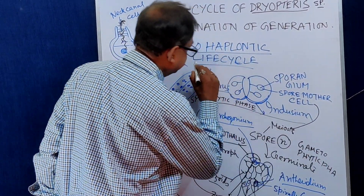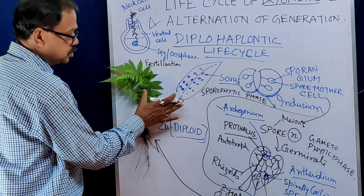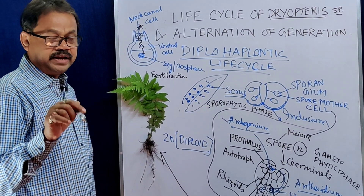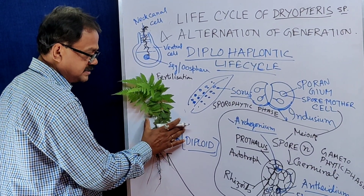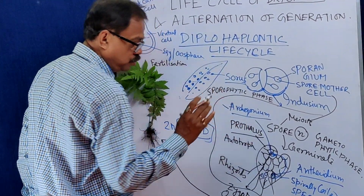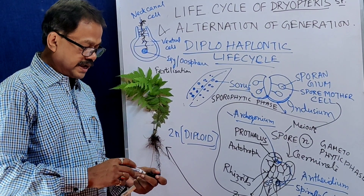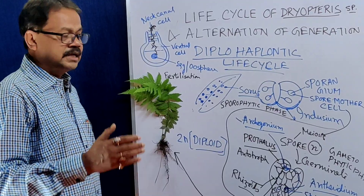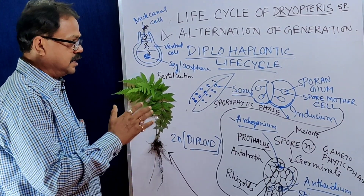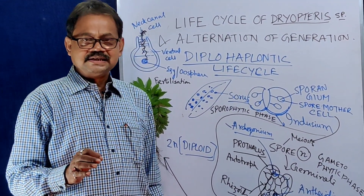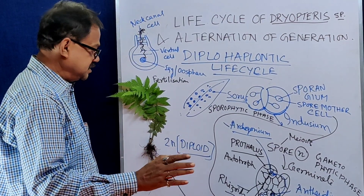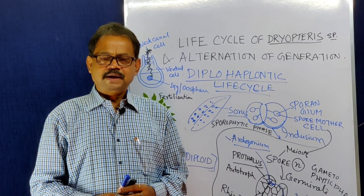Now, why is it called diplohaplontic? Because here both the sporophytic (diploid) phase and gametophytic (haploid) phase are independent. Both are autotrophs because chlorophyll is present in both. They are not depending on each other — that's why it is called a diplohaplontic life cycle. In this video I discussed the structure of Dryopteris, which is very important, as well as its diplohaplontic life cycle.